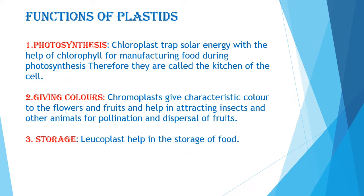Now let's see the functions of plastids. Plastids, as I told you, are called the kitchen of the cell. Chloroplasts trap solar energy with the help of chlorophyll for manufacturing food during the photosynthesis process. Therefore, they are called the kitchen of the cell. The second function of plastids is that they give beautiful colors to flowers and fruits.